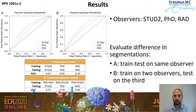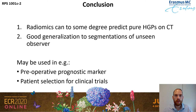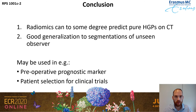So what can we conclude? Radiomics can to some degree predict pure HGPs on CT, and we also saw good generalization to segmentations from an unseen observer. This model could be used as a preoperative prognostic marker — instead of requiring a resection, you could preoperatively determine what the HGP would be. It could also be used in clinical trials to select patients with only a certain histopathological growth pattern.